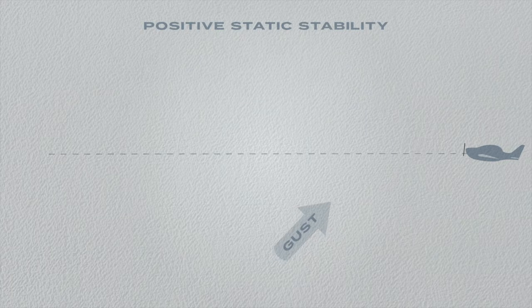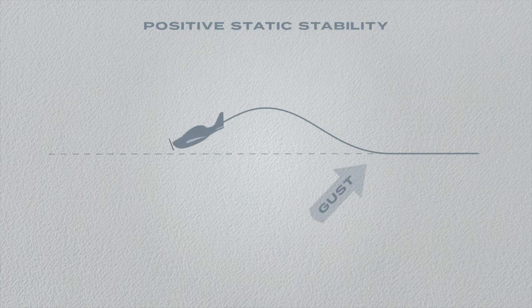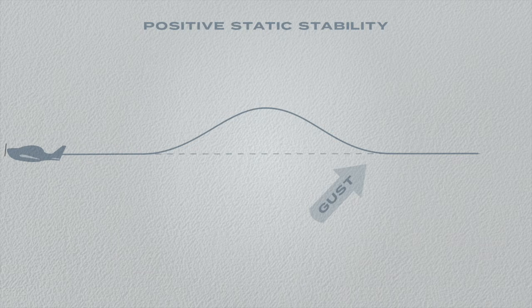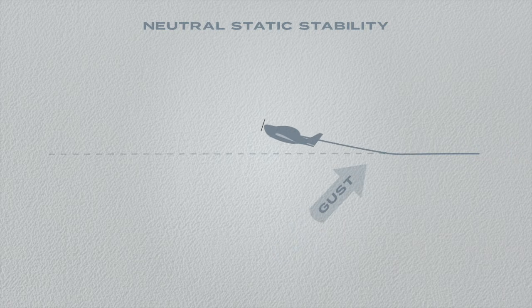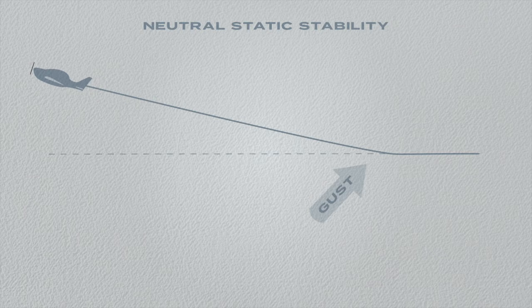When disturbed by a gust of wind, positive static stability is the initial tendency of the aeroplane to return to its original attitude. Most training aeroplanes are designed this way. Neutral static stability is the initial tendency of the aeroplane to continue in its new attitude.